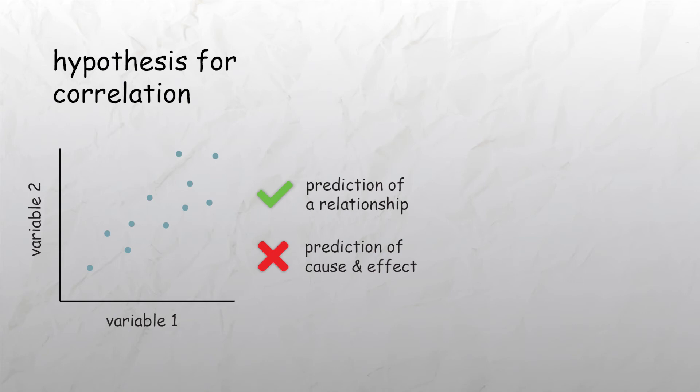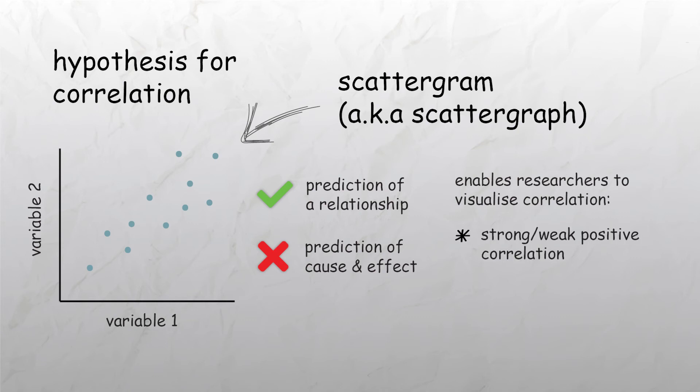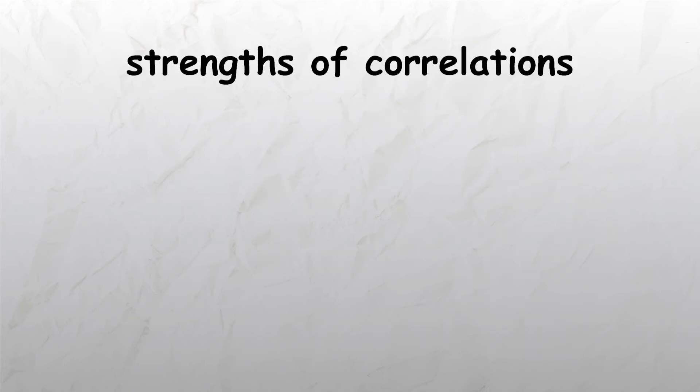When carrying out correlational analysis, the data is summarized by presenting it in a scattergram or scattergraph. This enables the researchers to visualize any correlation that may be present, whether there is a strong positive correlation, a weak positive correlation, no correlation, a weak negative correlation, or a strong negative correlation.